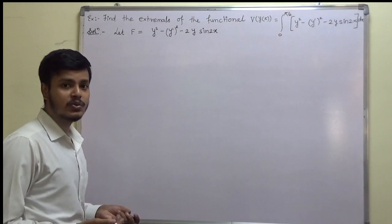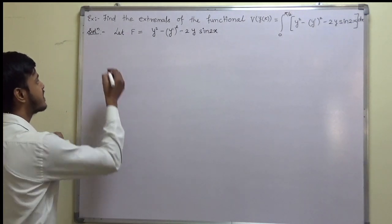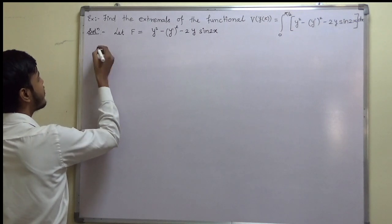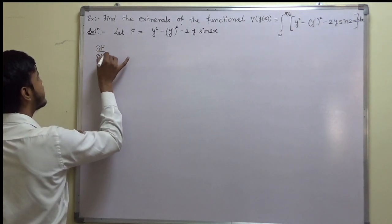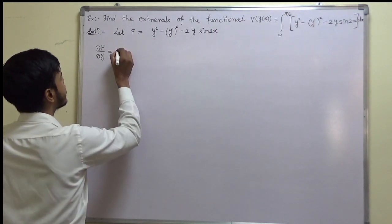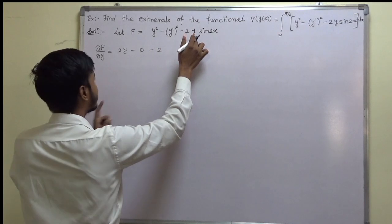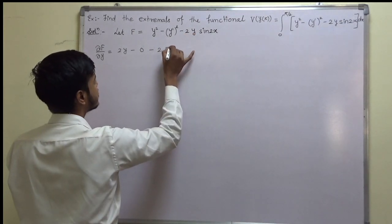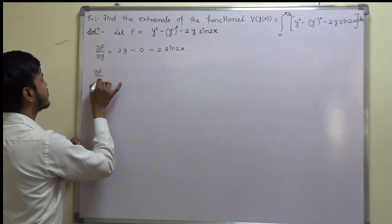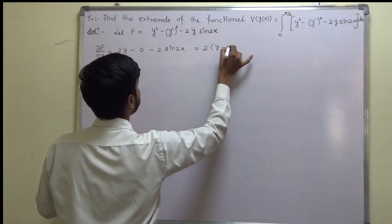Now we are going to make use of Euler's equation, which involves the derivative of f with respect to y and with respect to y'. Let us find ∂f/∂y — that is, the derivative of f with respect to y, keeping x and y' constant. So we get 2y − 0 − 2·(1)·sin 2x, which simplifies to 2y − 2 sin 2x.